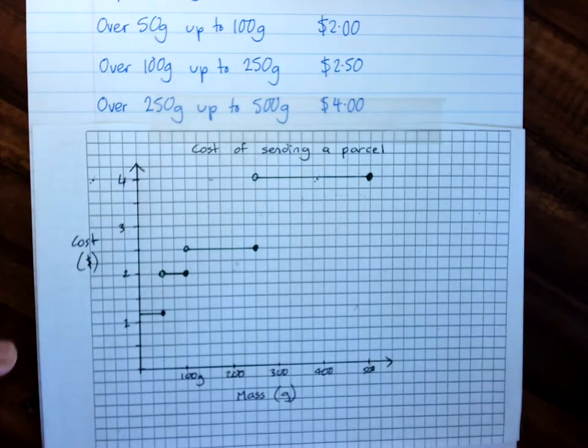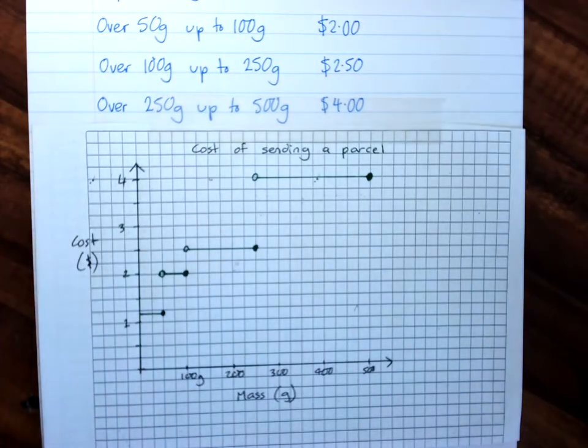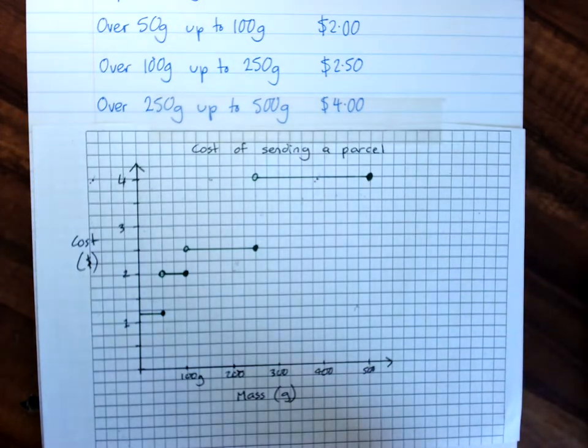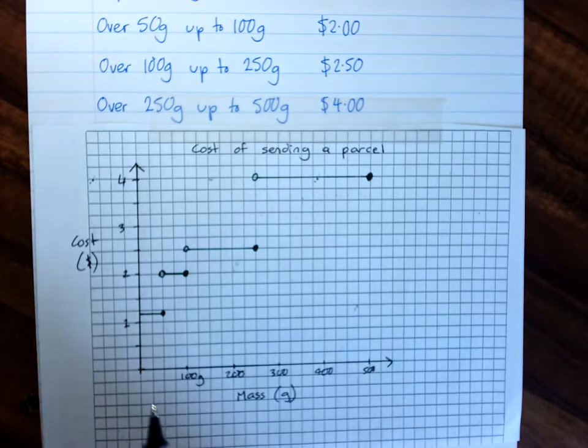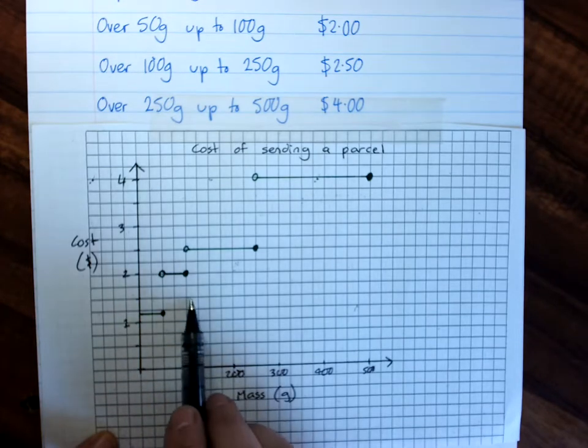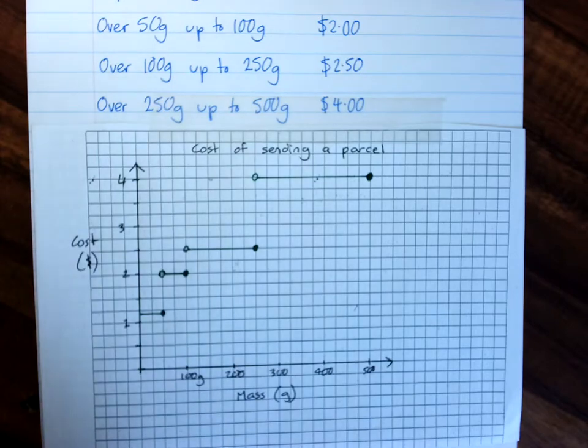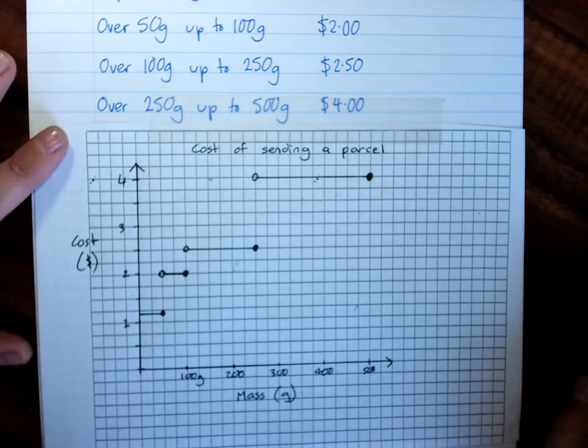And then, if they gave us a question, we could, of course, read our answer from that. So, if they said, well, what does it cost to send a 120 gram parcel? You'd go to 120 grams, you'd go up until you hit a step, you'd go across, and you'd say, there we go, it's $2.50. So, that is a step graph.